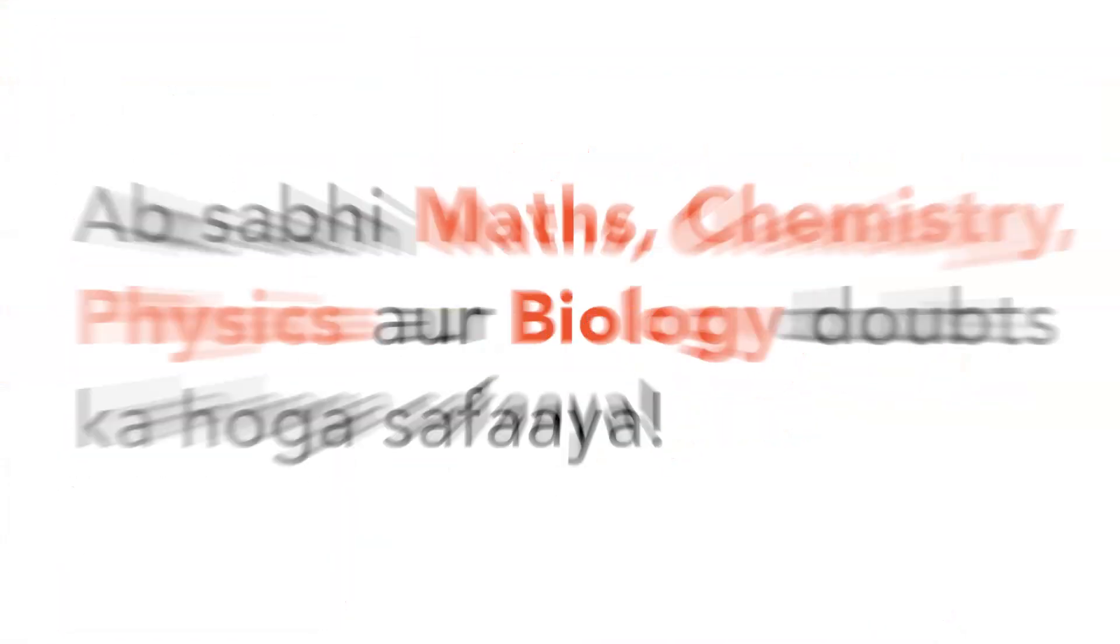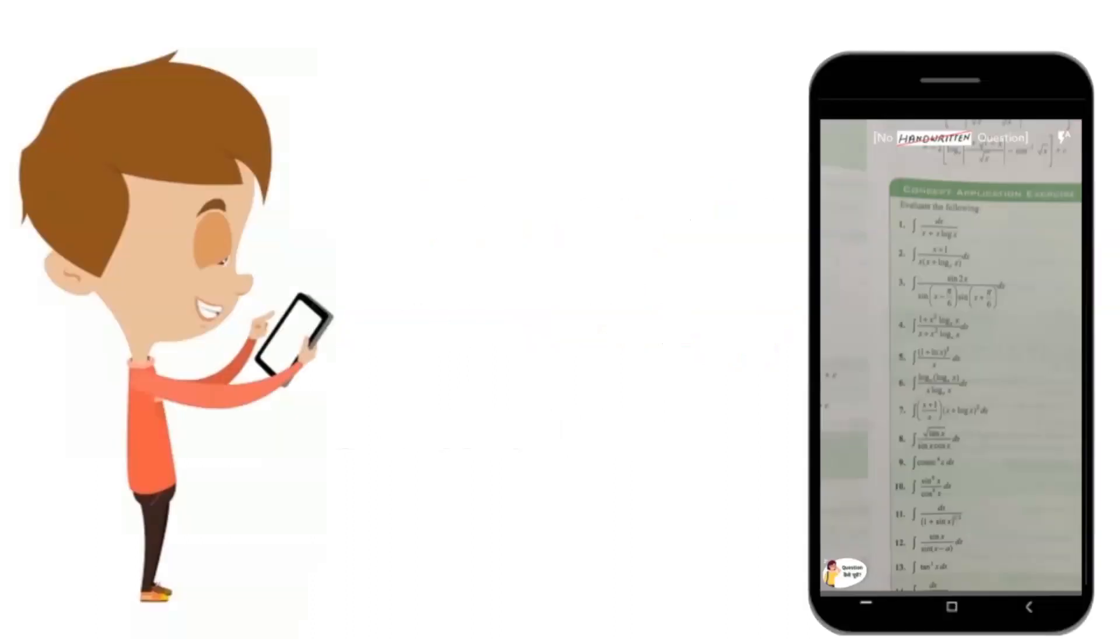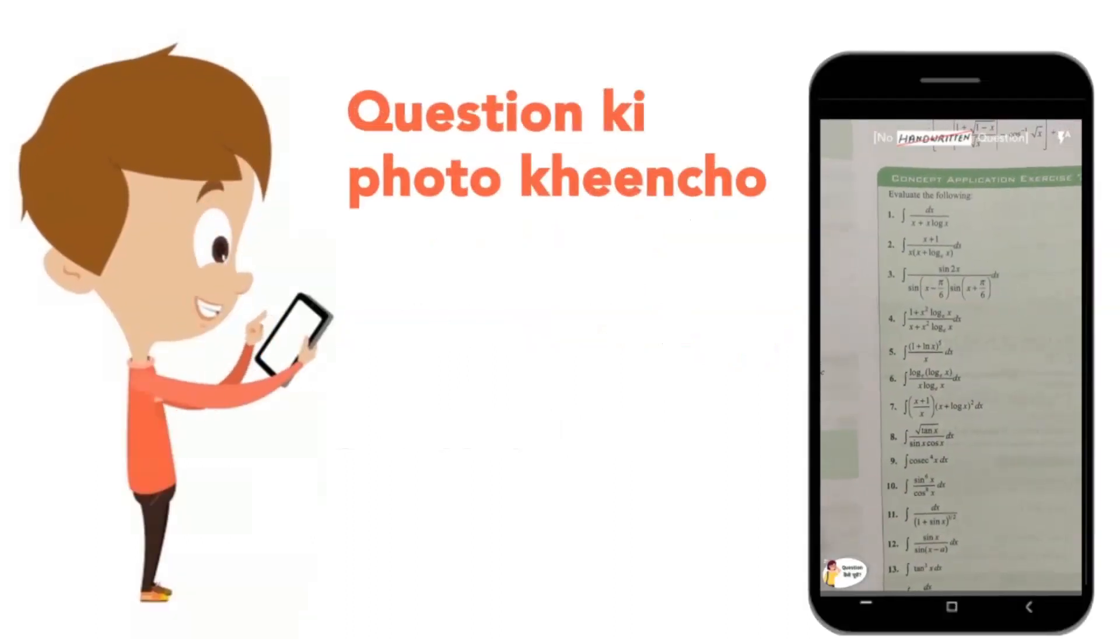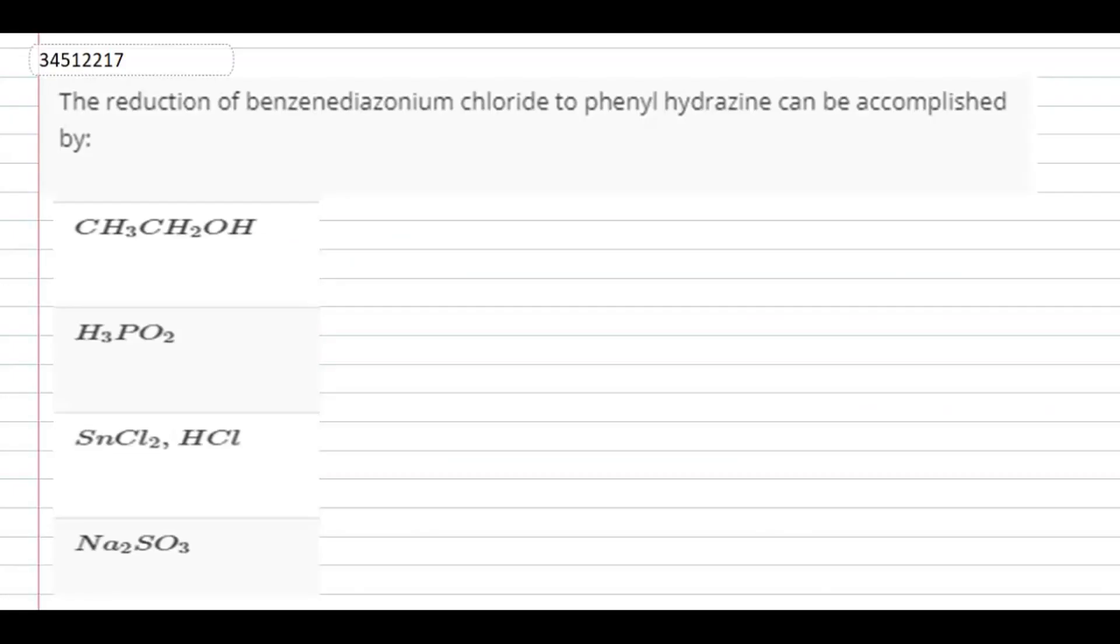Today we have been asked: the reduction of benzenediazonium chloride to phenyl hydrazine can be accomplished by what? The first option is CH3CH2OH, that is ethanol. Second option is H3PO2, that is hypophosphorous acid.